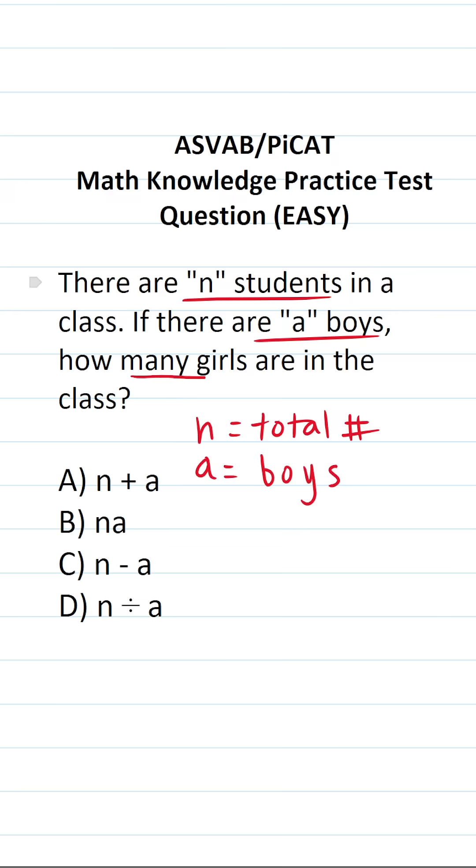It doesn't tell us what letter variable to use for girls, but I'm going to use b. So b refers to the number of girls in the class. This one should be pretty easy to do.